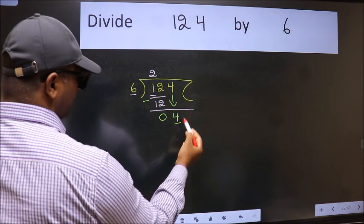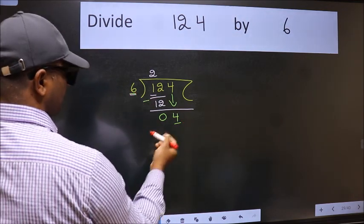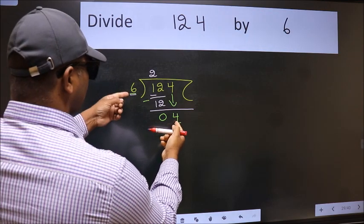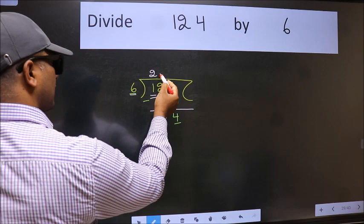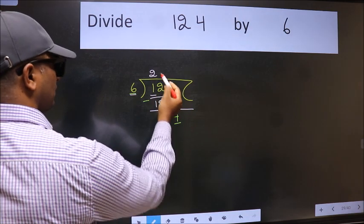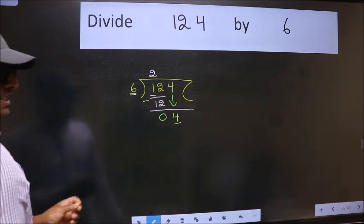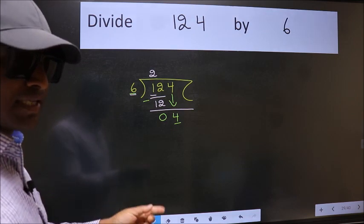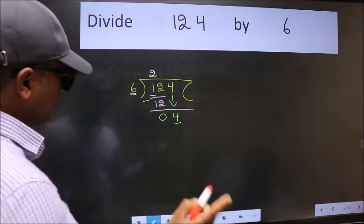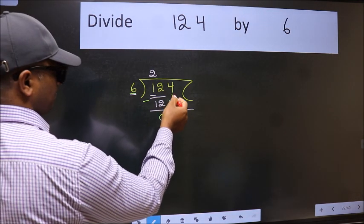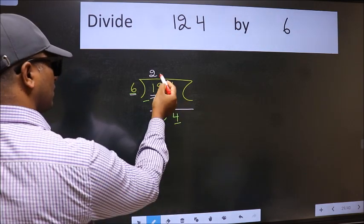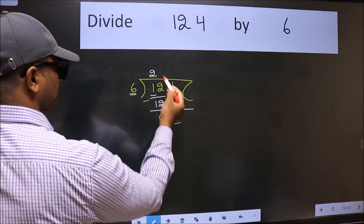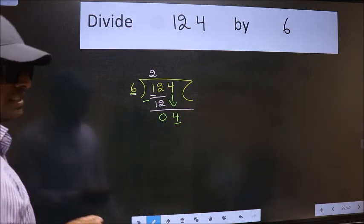Here we have 4 and here 6. 4 is smaller than 6. So what many do is they directly put dot, take 0, which is wrong. Why is it wrong? Because just now you brought this number down. And in the same step, you want to put dot, take 0, which is wrong.